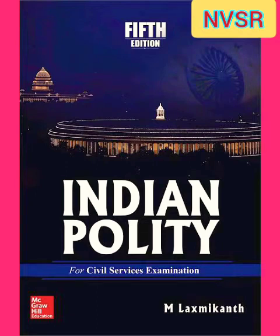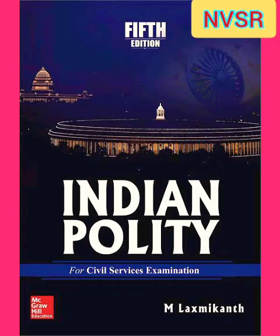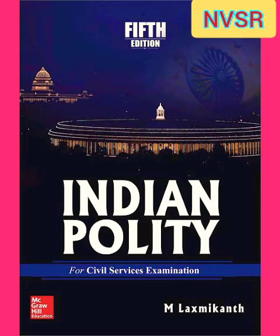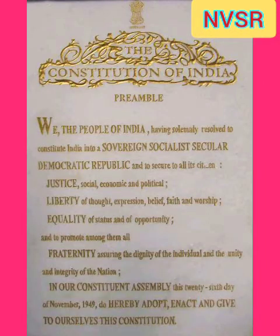Justice: The term 'Justice' in the Preamble embraces three distinct forms — social, economic and political — secured through various provisions of fundamental rights and directive principles. Social justice denotes the equal treatment of all citizens without any social distinction based on caste, colour, race, religion, sex, and so on. It means the absence of privilege being extended to any particular section of society and improvement in the condition of backward classes. Economic justice denotes non-discrimination between people on the basis of economic factors. It involves the elimination of glaring inequalities in wealth, income and property. A combination of social justice and economic justice denotes what is known as distributive justice.